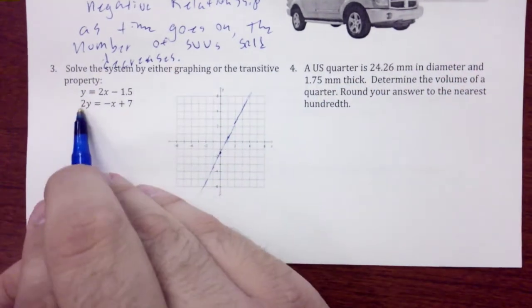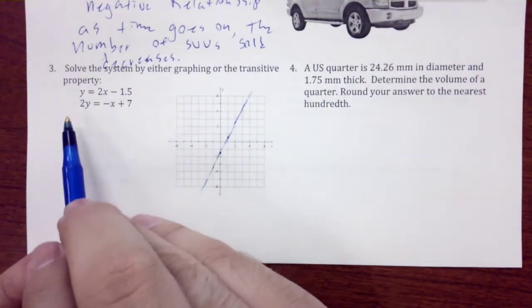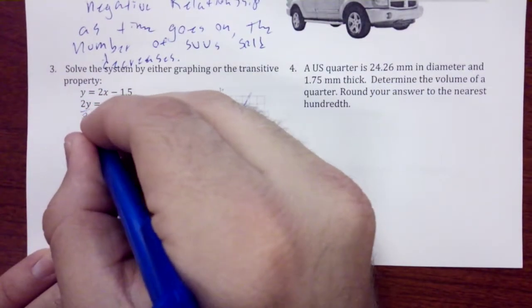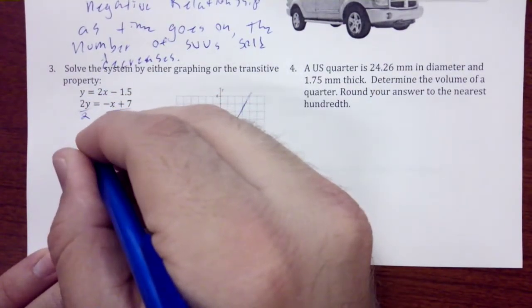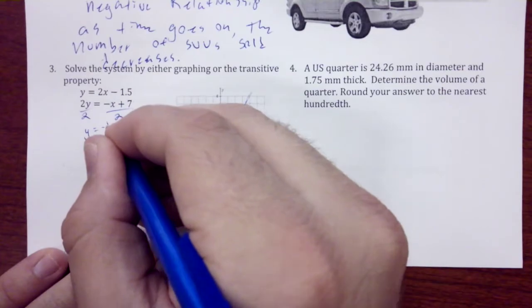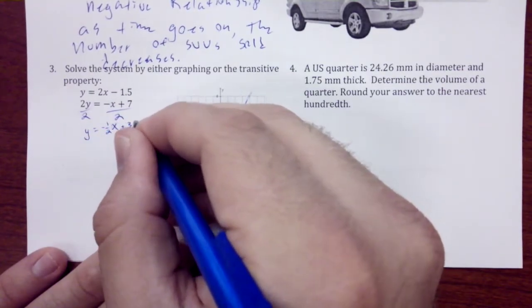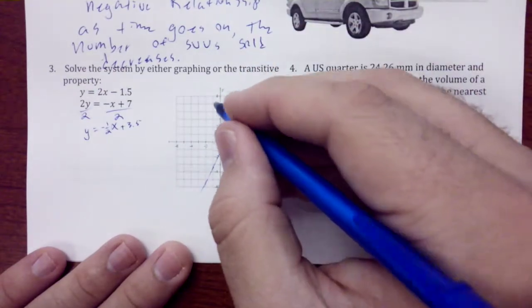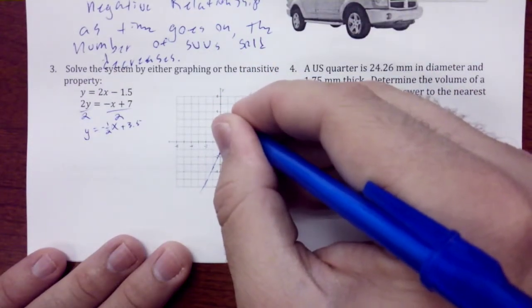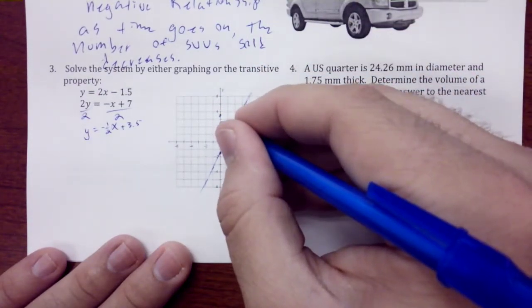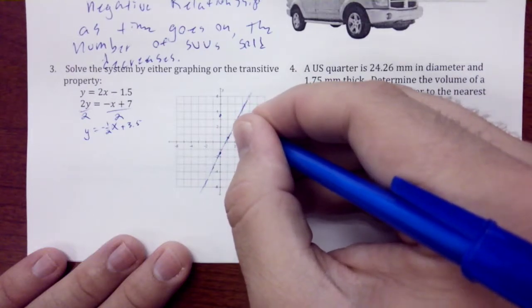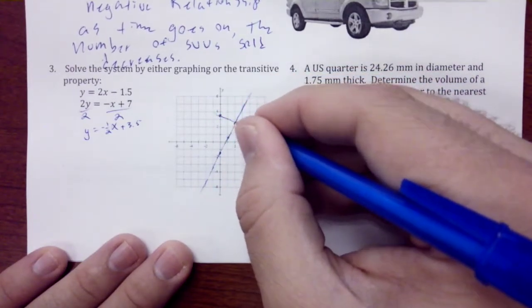That's our number one. We need to solve this for y, so we're going to divide both sides by 2. So y = -1/2x + 3.5. We're going to come up here to 3.5 and then we're going to go down 1 over 2. Looks like right there we have our answer, so that is at (2, 2.5).